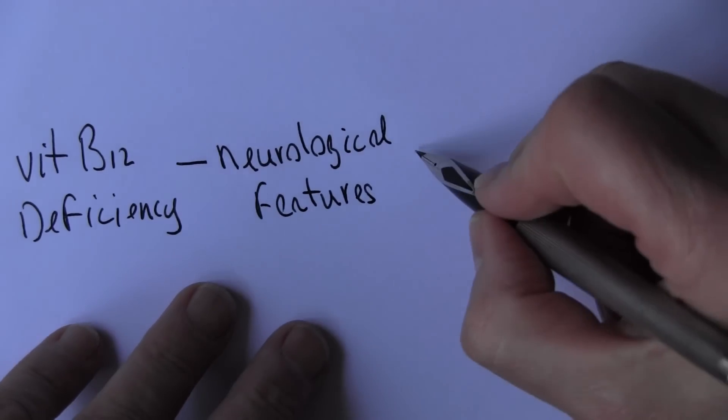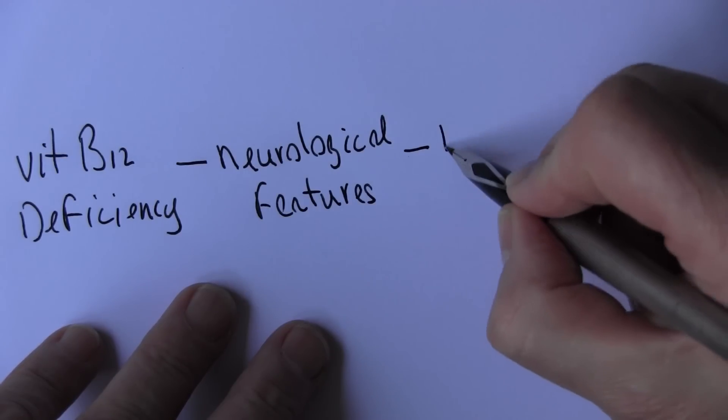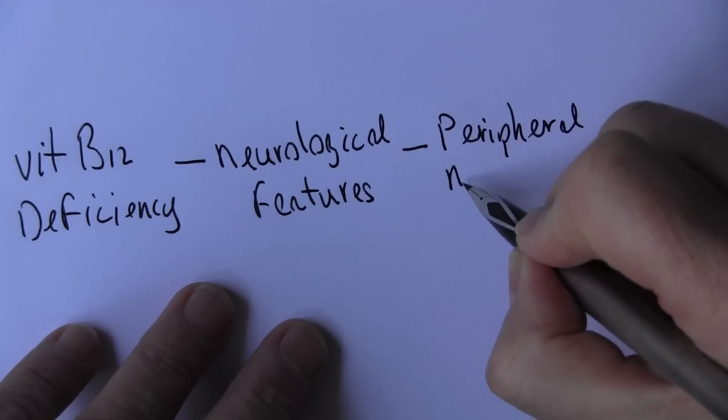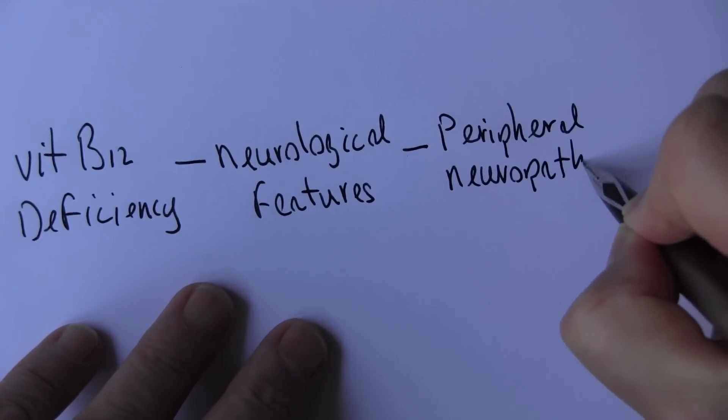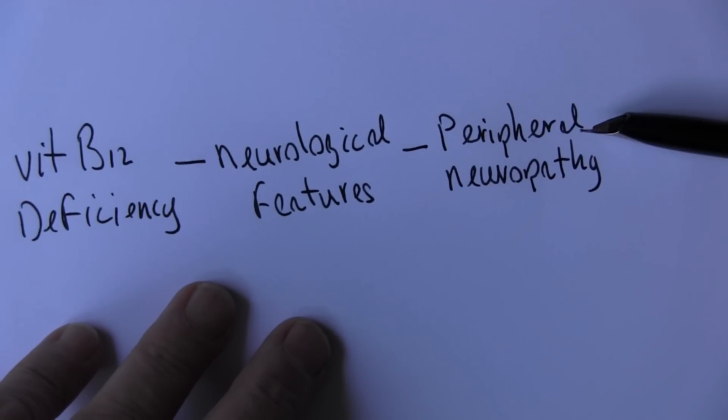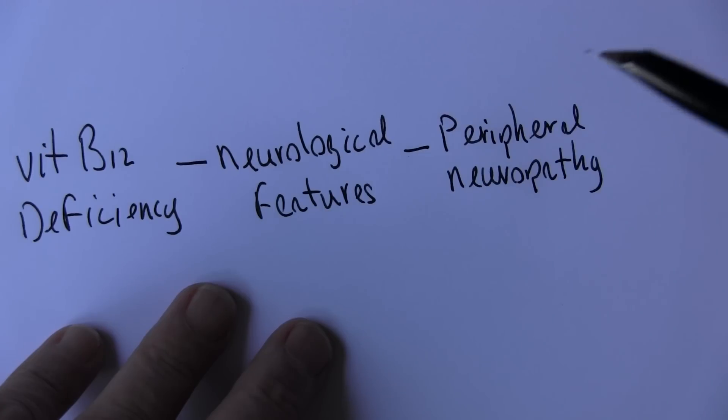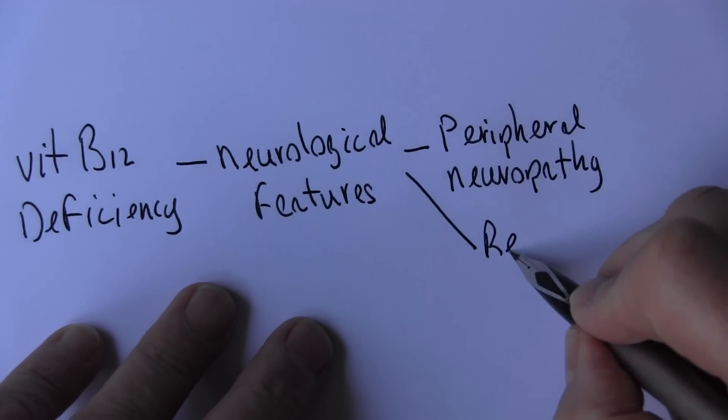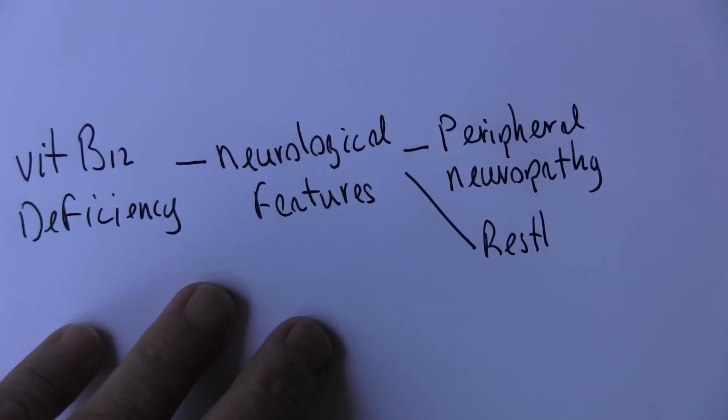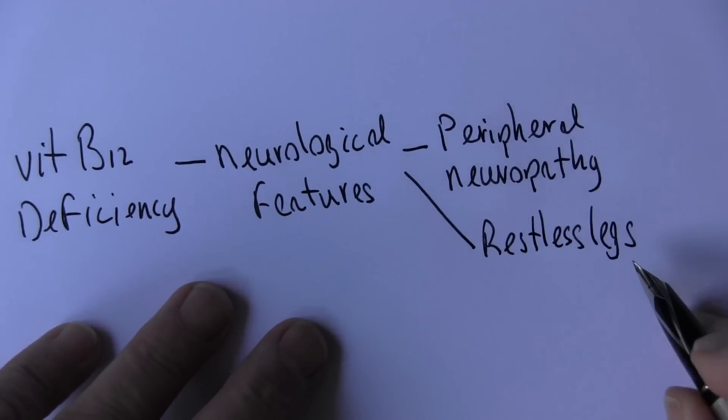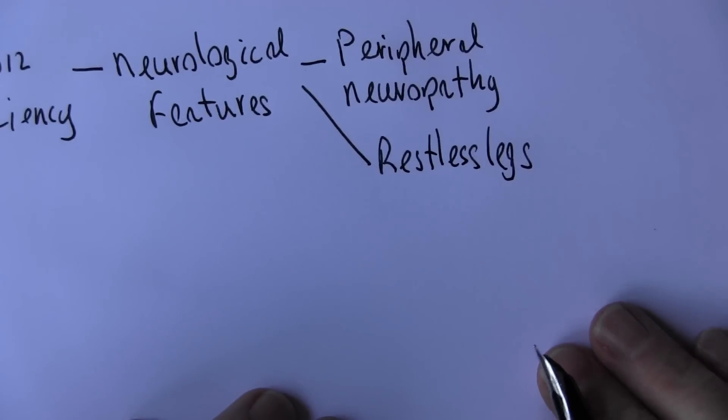Because B12 is essential for the health and well-being of the nervous system. So what we can see here is sometimes peripheral neuropathy. This is disease of the peripheral nervous system, often affecting the legs. And another thing we do get here is restless legs. Restless leg syndrome. Very common.